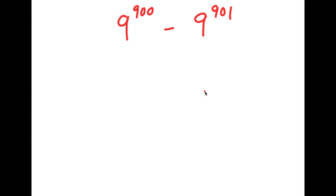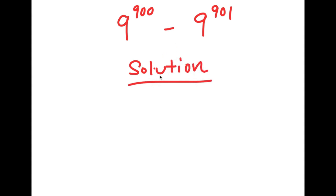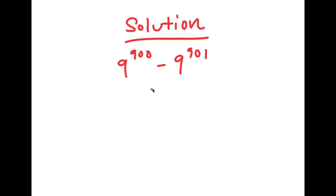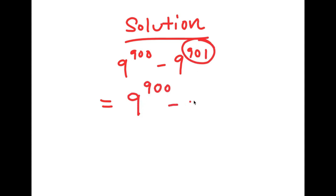In this problem I have 9 to the power of 900 minus 9 to the power of 901. For my solution, I'm going to start by rewriting the original problem: 9 to the power of 900 minus 9 to the power of 901. I can rewrite 901 as 900 plus 1, so this is the same thing as 9 to the power of 900 minus 9 to the power of 900 plus 1.